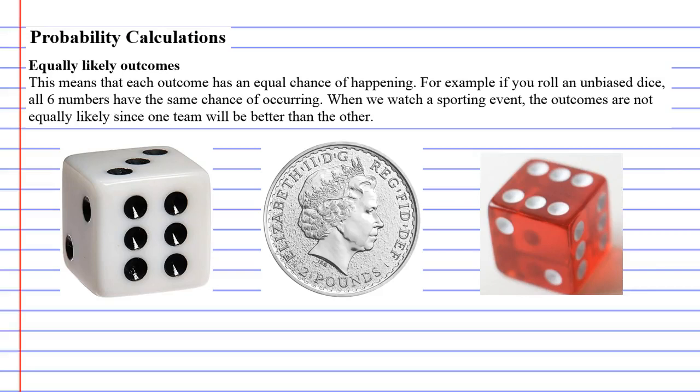Probability calculations, and this part we're going to talk about what is called equally likely outcomes. The first two images you can see here have equally likely outcomes because this dice has the numbers one to six.